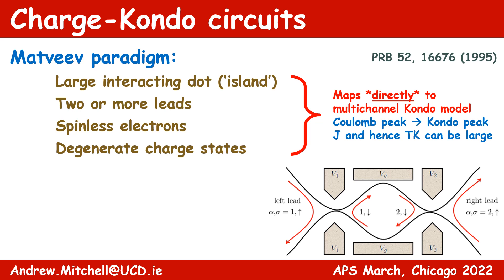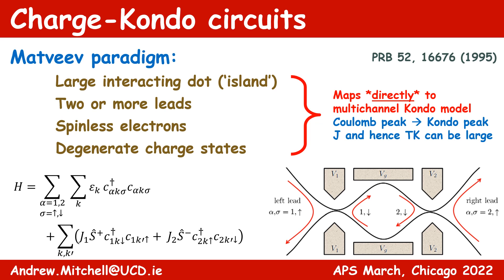The dot is also interacting and has a finite capacitance. Gate voltage tuning to the macroscopic charge degeneracy point of the dot gives us an effective two-level system on the dot, which can be mapped to up and down pseudo-spin states. These can be interconverted by tunneling onto or off the QPCs. The system maps directly onto a multi-channel Kondo model, but note that there is no underlying Anderson model here, and the Kondo coupling J is not necessarily perturbatively small — it is controlled by the QPC transmission, which can be large.